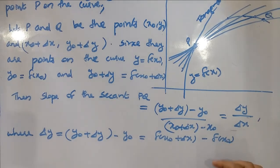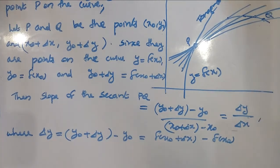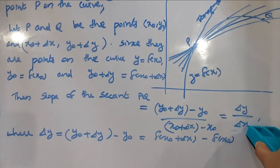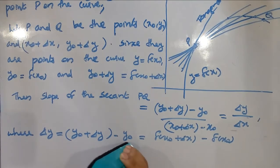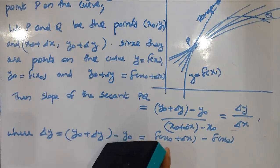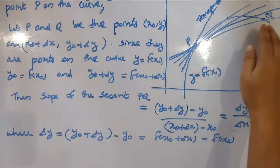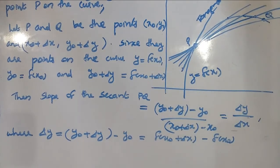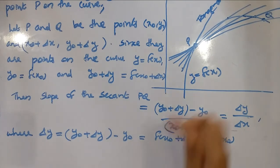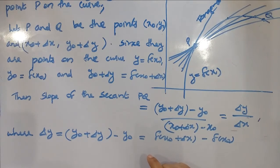We will have the slope of the tangent line. As Δx becomes small — nearly zero, with x₀ fixed — the slope Δy/Δx of the secant line comes close to the slope of the tangent line.